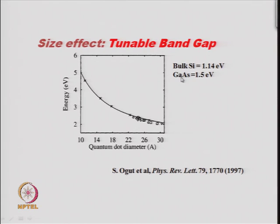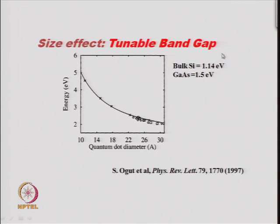As the size decreases, the band gap changes — we can tune the band gap in semiconductors. This has been plotted for several semiconductors. For bulk silicon, you have a value of 1.14 electron volts, and for bulk gallium arsenide you have a value of 1.5 electron volts. These values can change depending on the size of the nanoparticle.